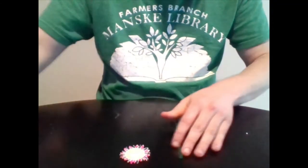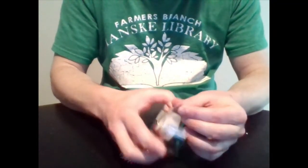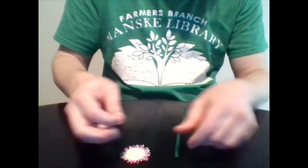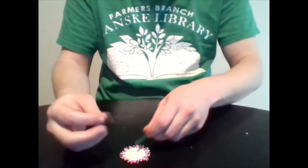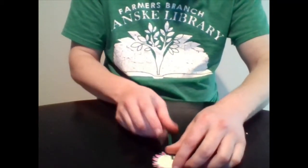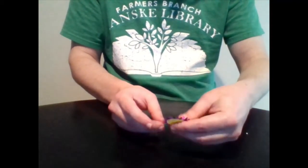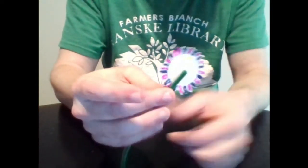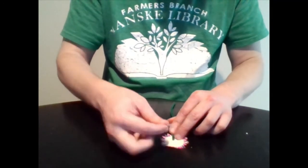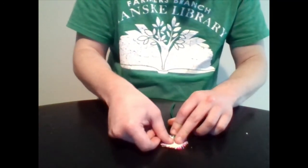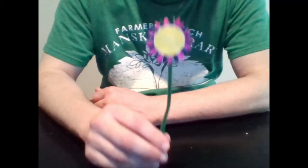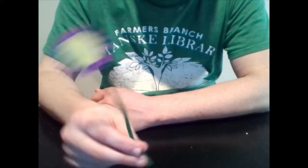Once you have the flower cut out, what you're going to do is take one of your pipe cleaners and you might want to straighten it out just a little bit. Then you're going to get some tape and you just want a little piece of tape. Lay down the pipe cleaner on the back of the flower like this and then you're going to tape the pipe cleaner onto the flower.